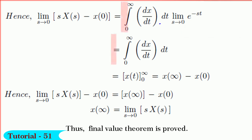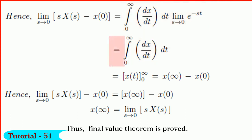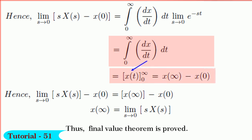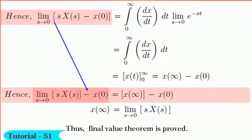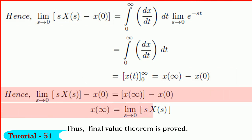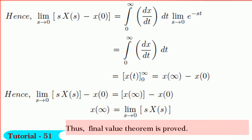we get the integration of dx/dt dt within limits 0 to infinity. By integrating, we get x(t) between limits t equals 0 to infinity, from which we get: limit of sX(s) minus x(0) as s tends to 0 is equal to x(infinity) minus x(0). By solving, we get x(infinity) equals the limit of sX(s) as s tends to 0. Thus, the final value theorem is proved.